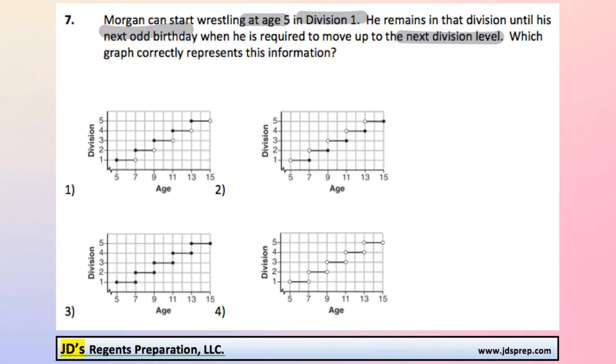Alright, so let's take a look at our options here. We notice that at age 5, he's starting in division 1. So we can see we've got a solid dot here. That makes sense.